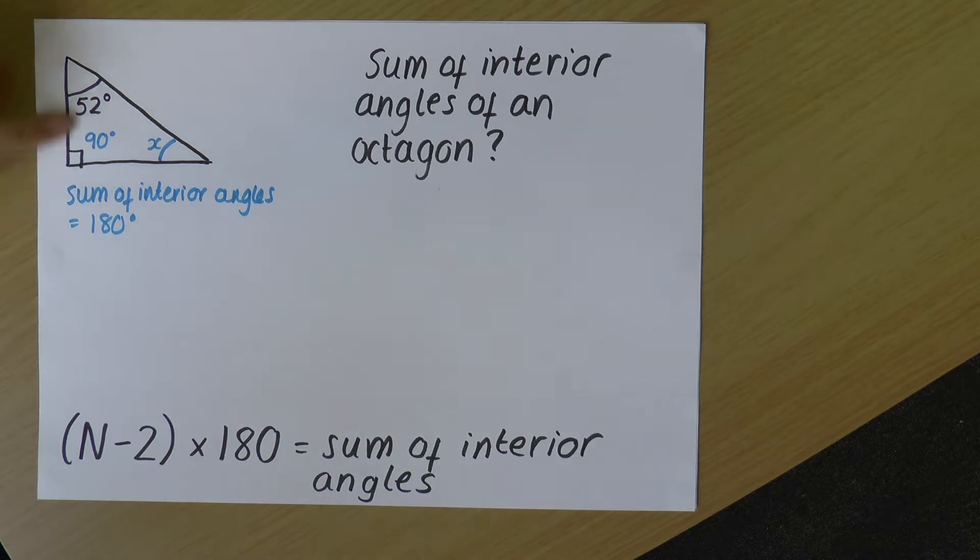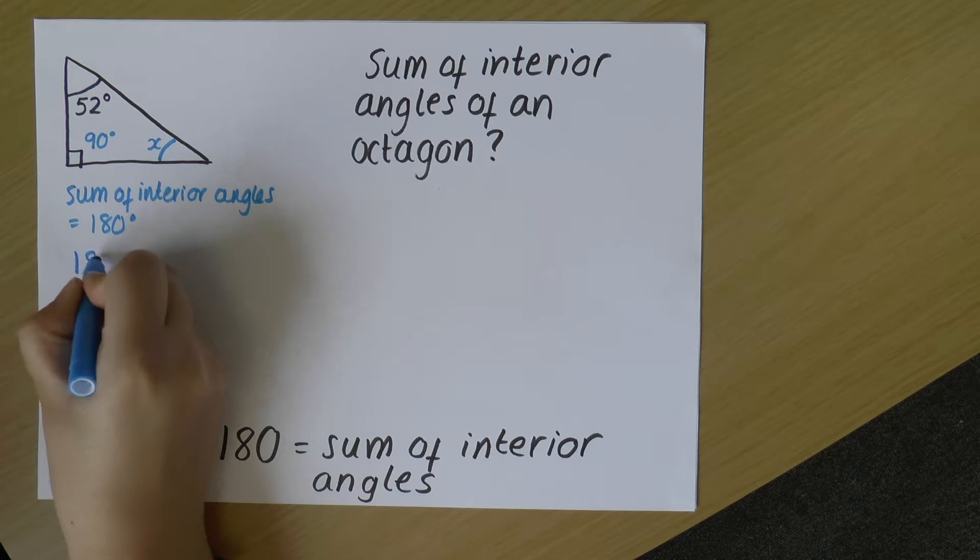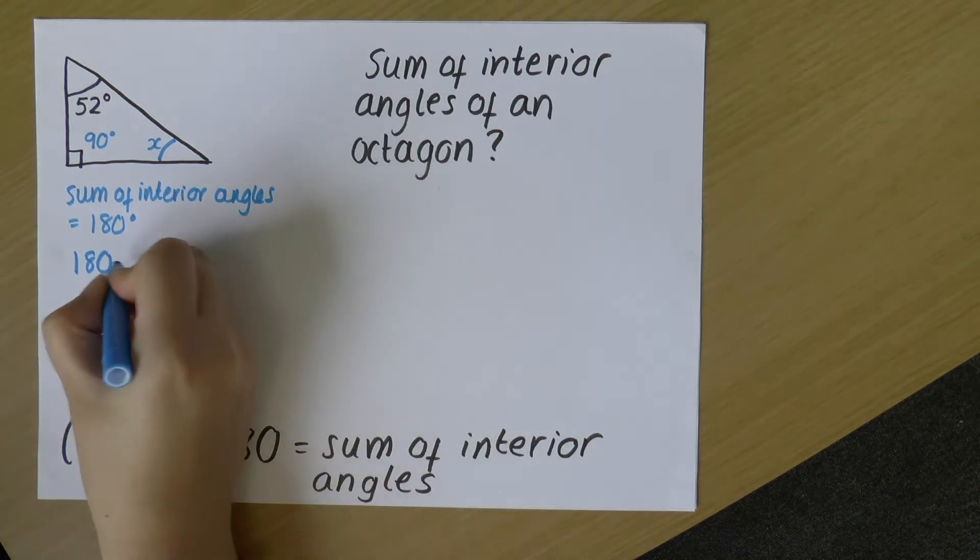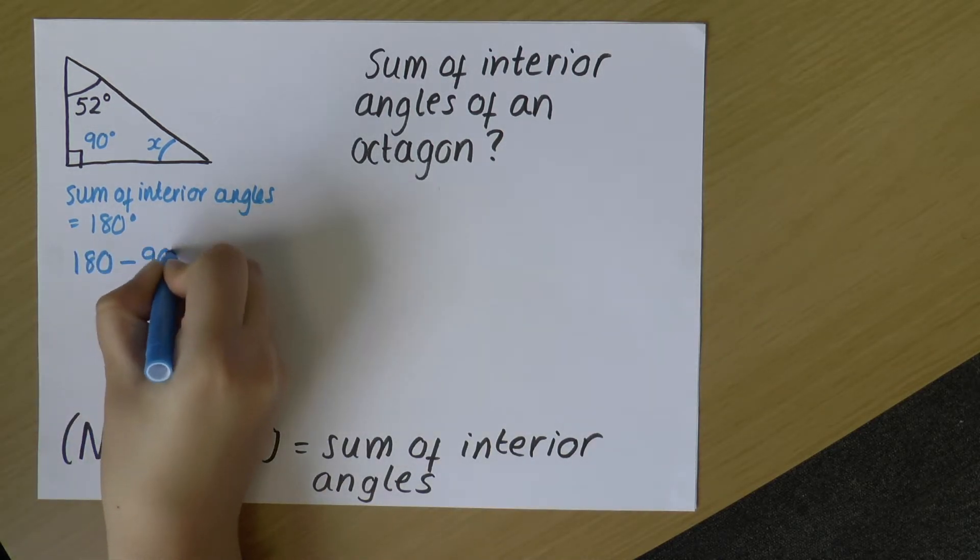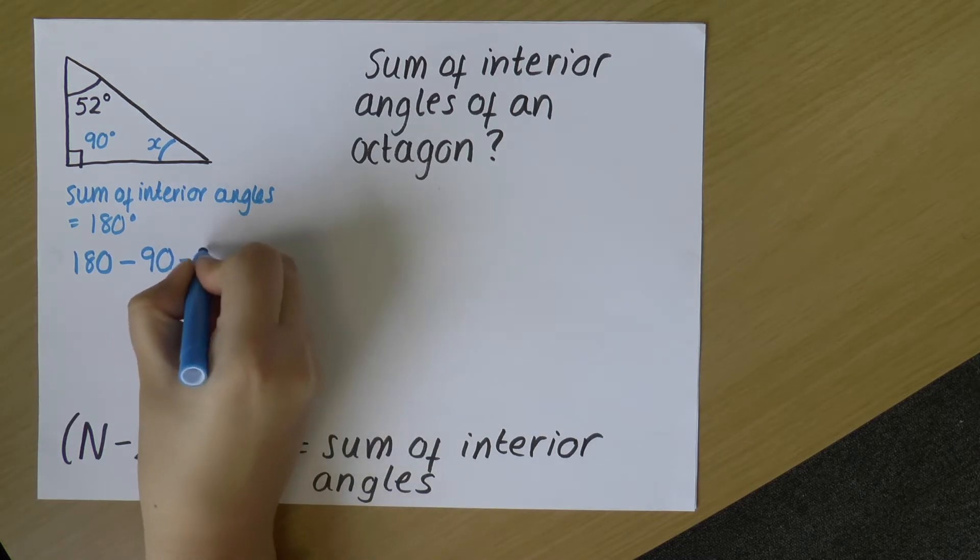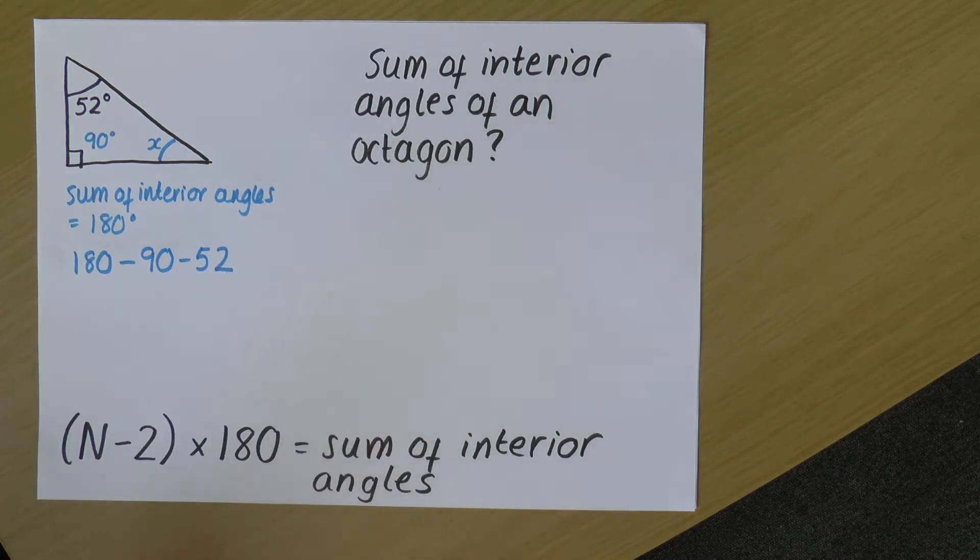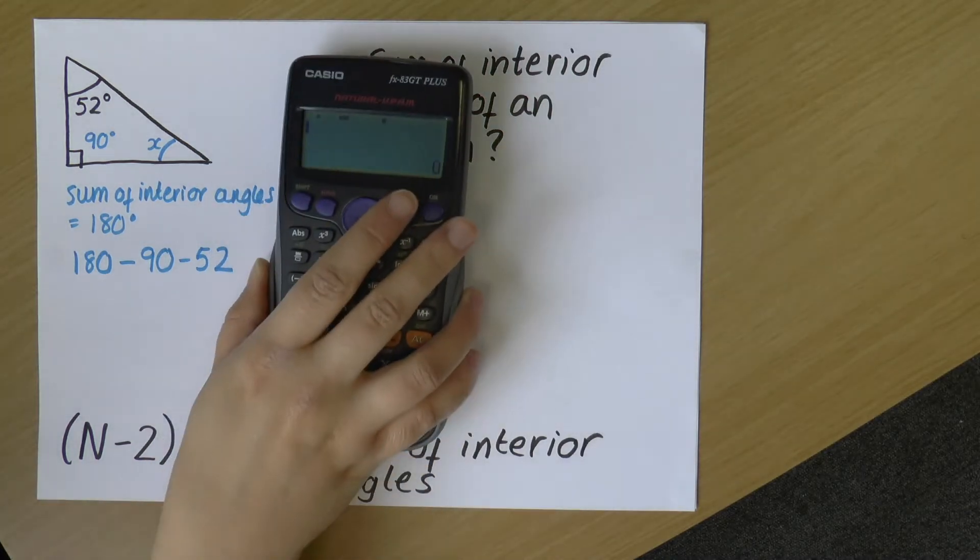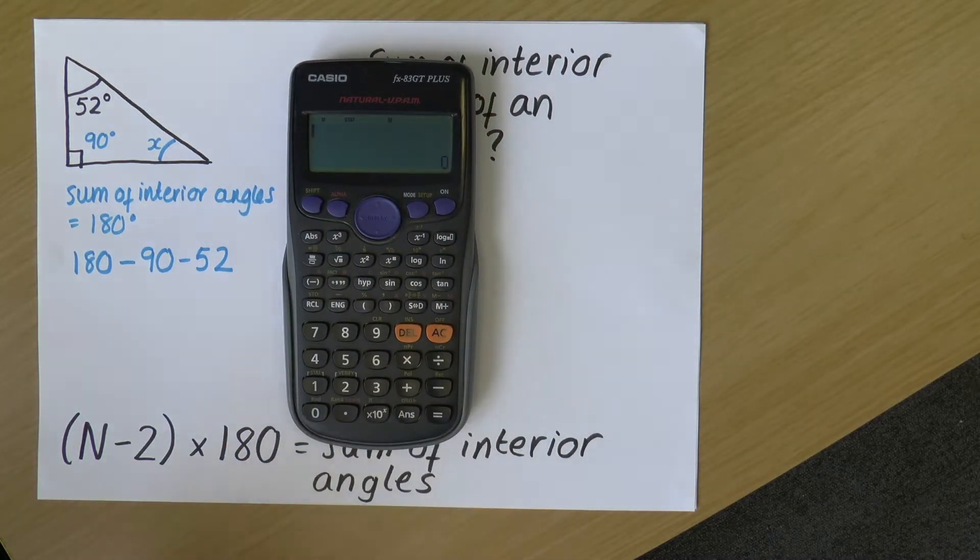And I know that all three add up to 180. So what I can do is I can just take away these two angles from 180 to give me the missing angle. So let's have a go at doing that. So my calculation is 180 minus 90. That's that right angle. And then minus 52. So I'm going to do this on a calculator. So let me bring my calculator over.